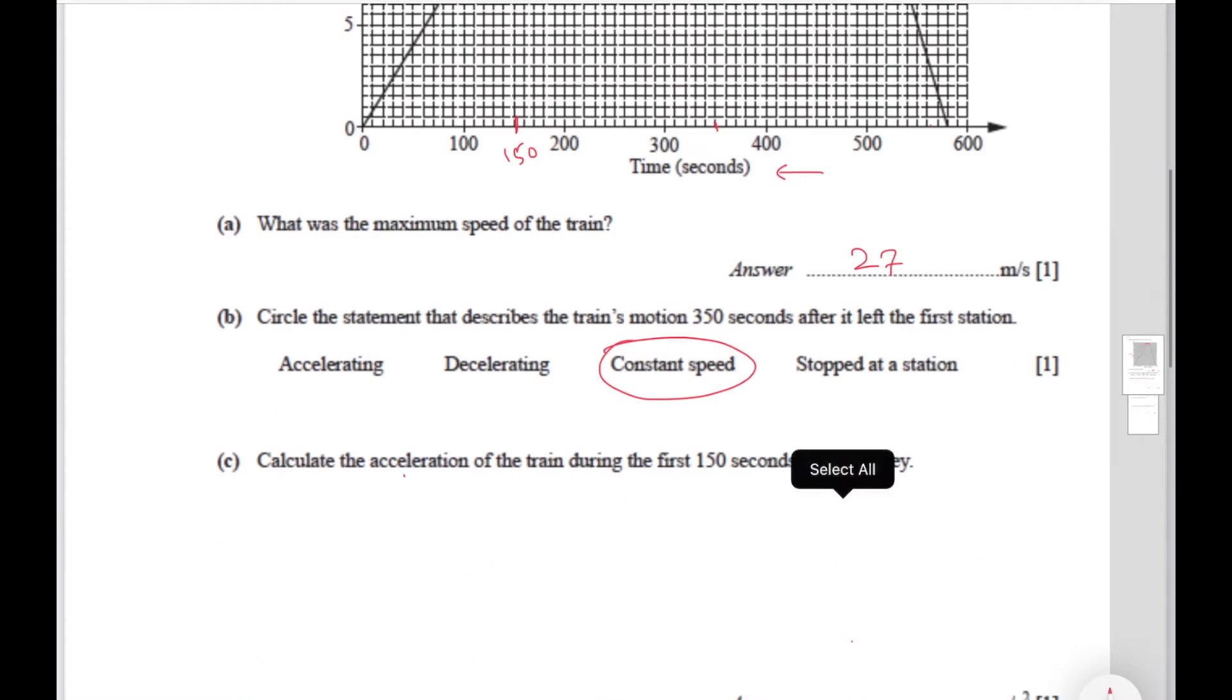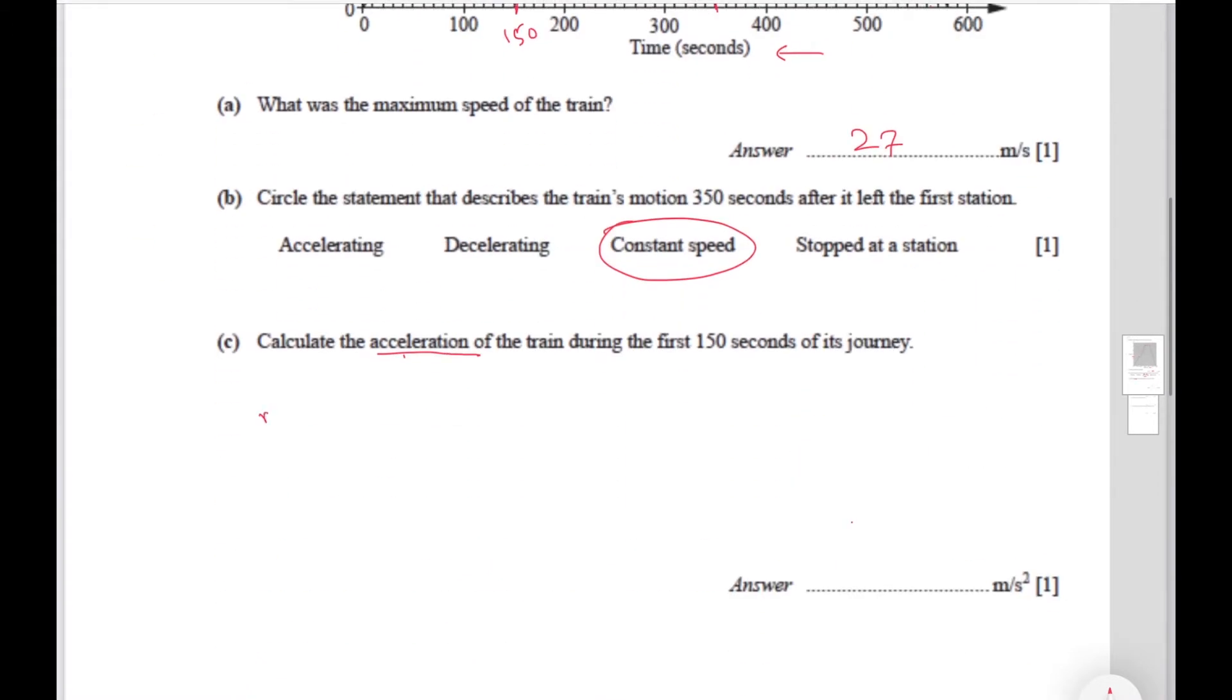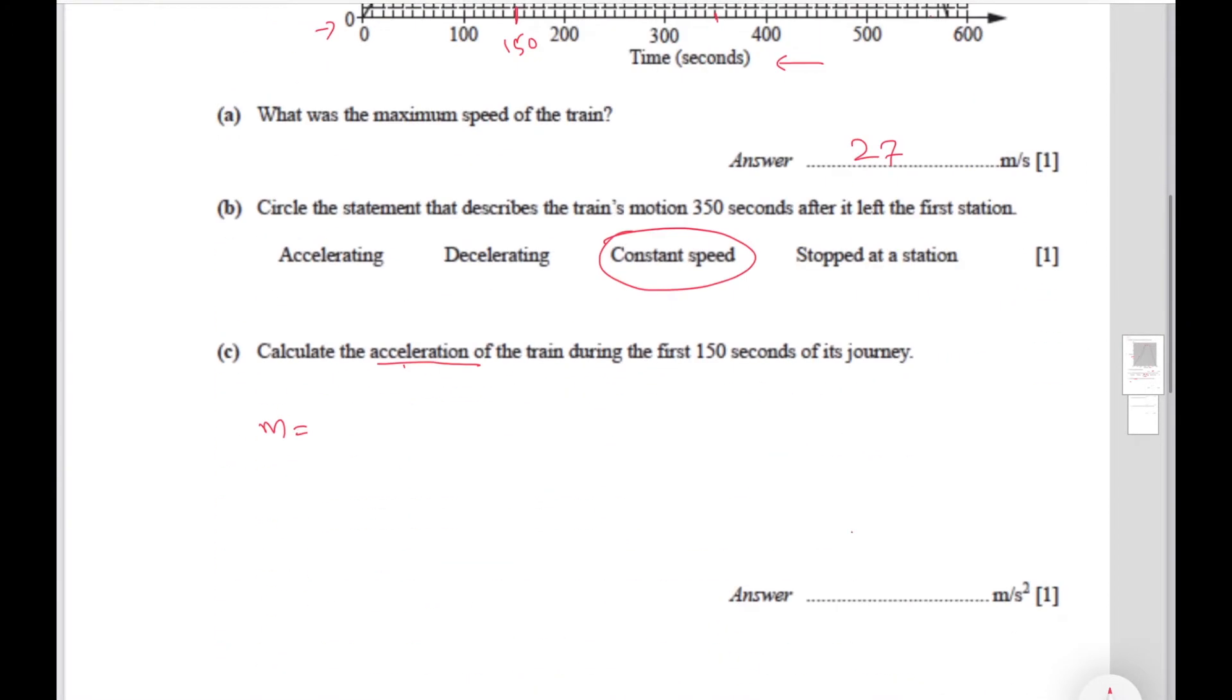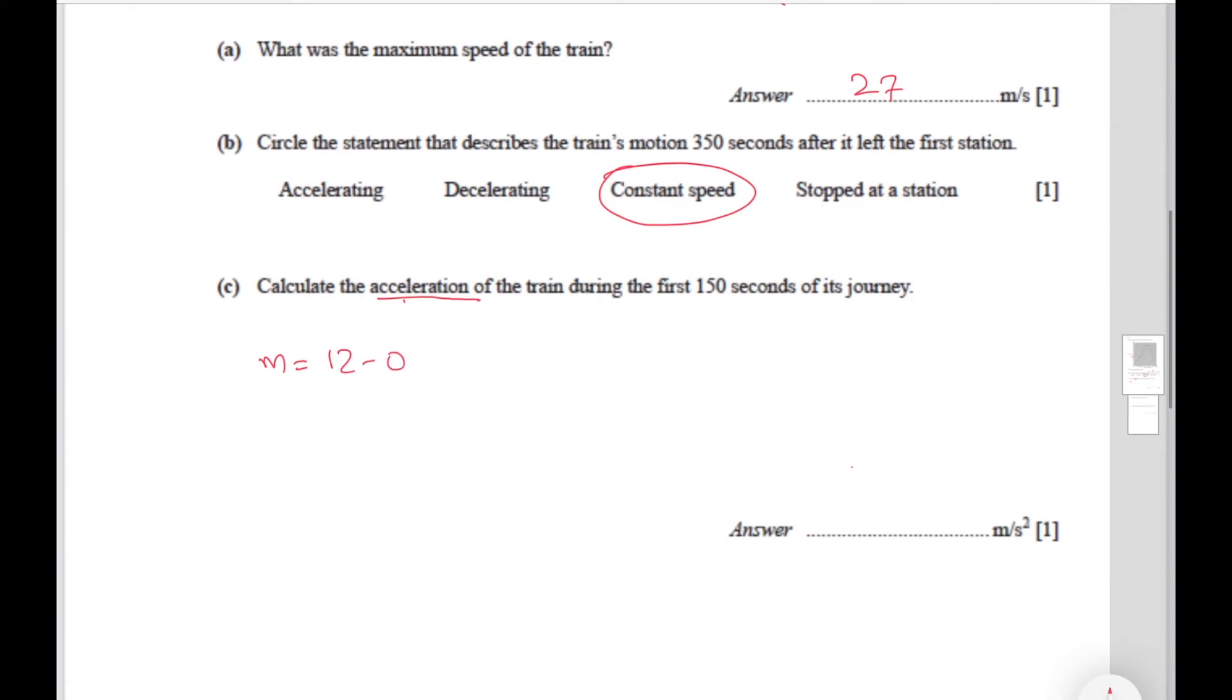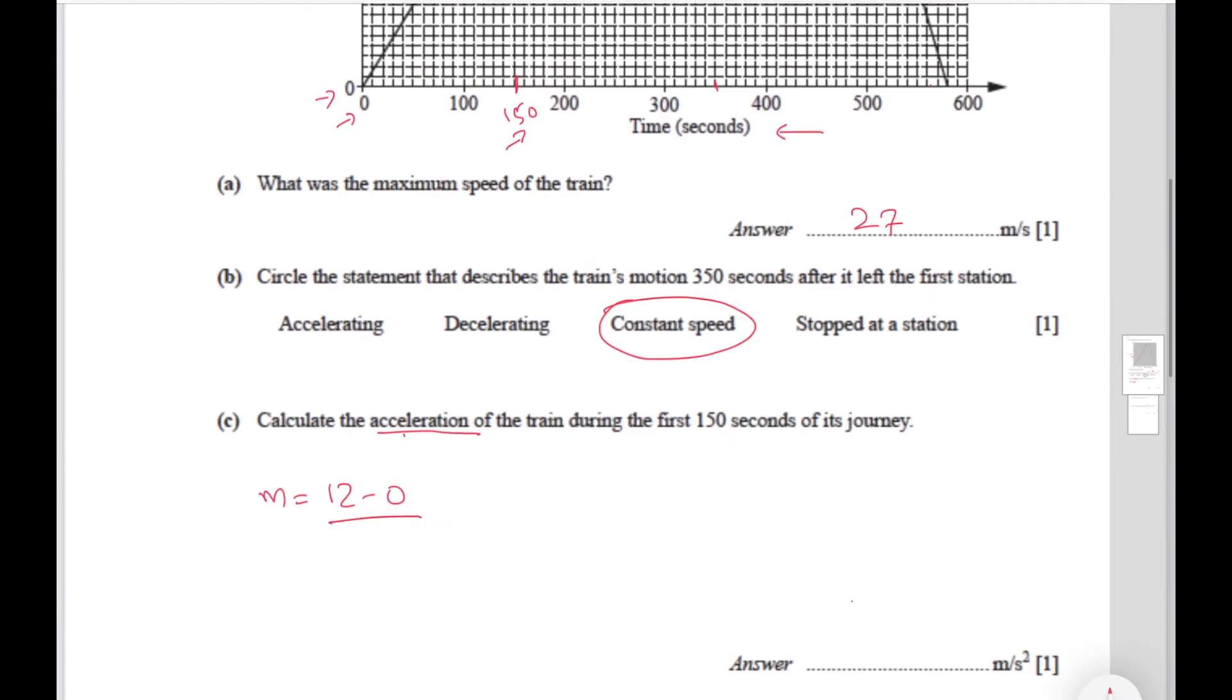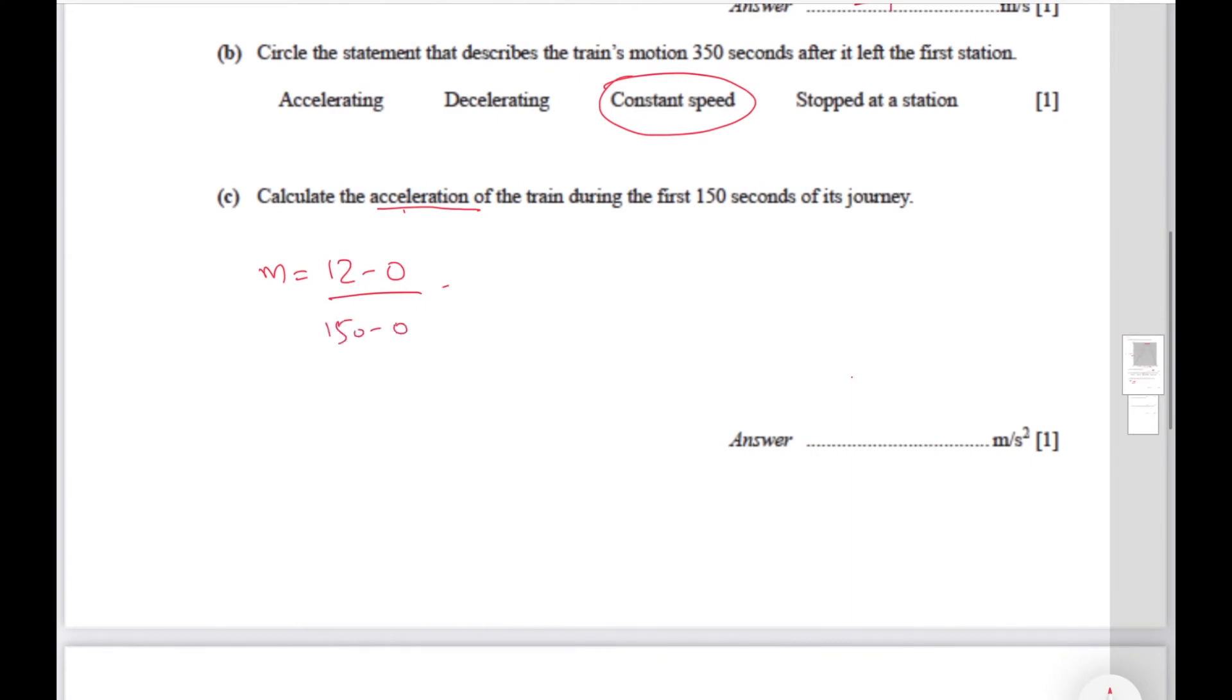The question is asking us to find the acceleration, that means we need to find the gradient. The gradient in this case is going to be y2 which is 12 minus y1 which is 0. So you do 12 minus 0 divided by x2 which is 150 minus 0 which is x1. So you do 150 minus 0. Let's see what this comes out to be.